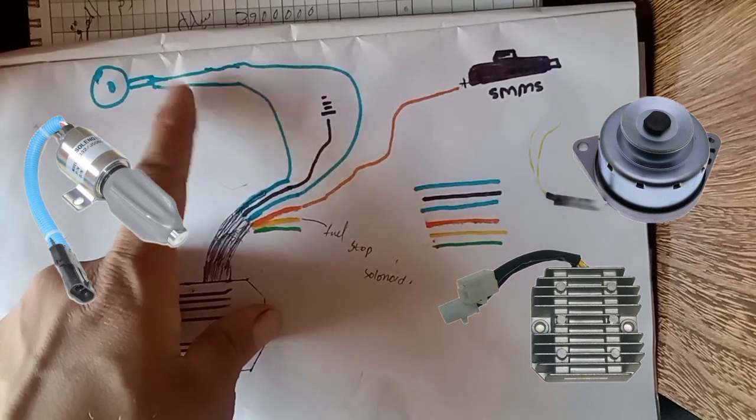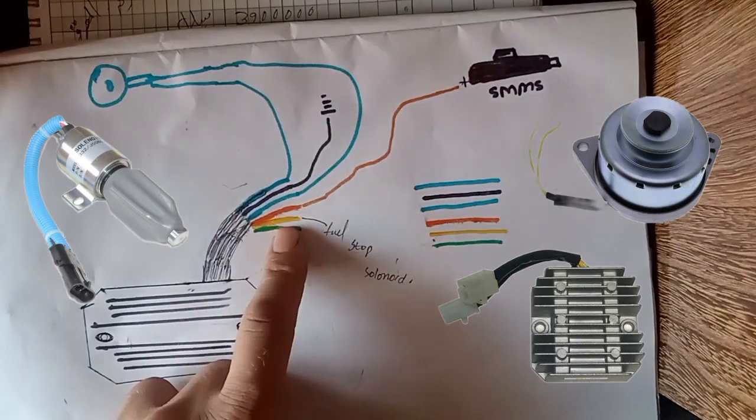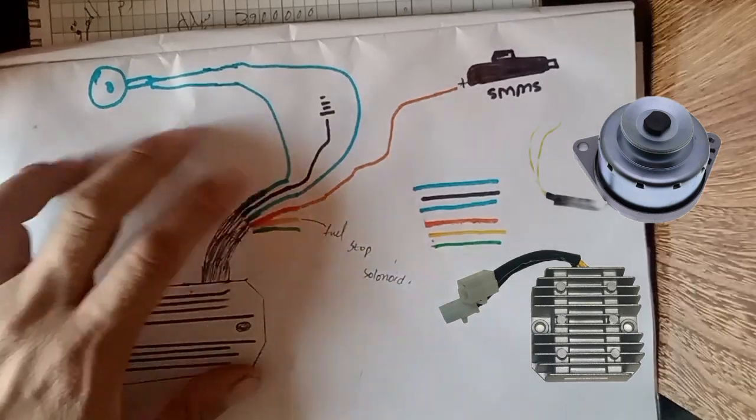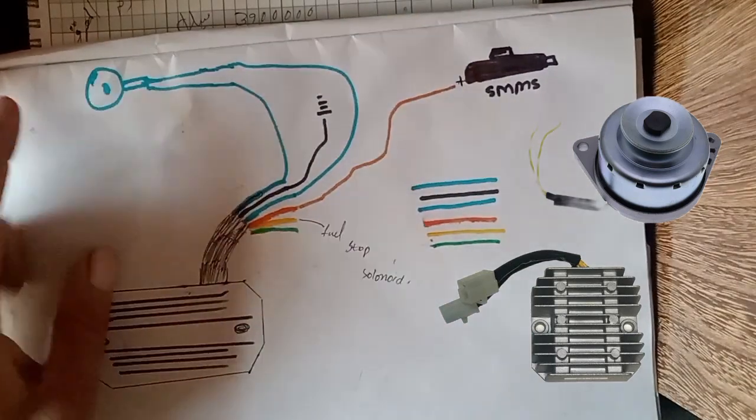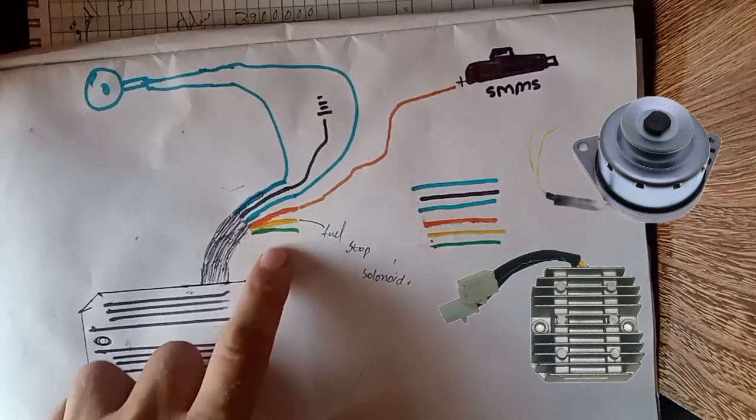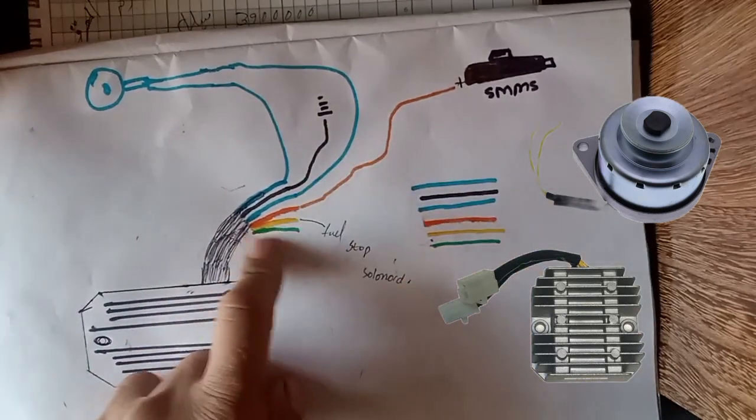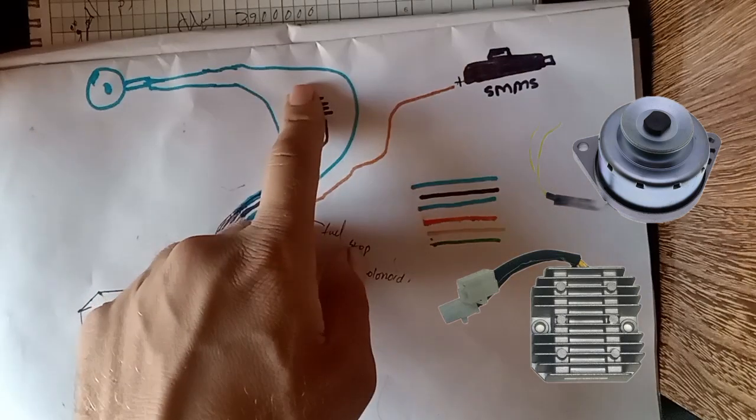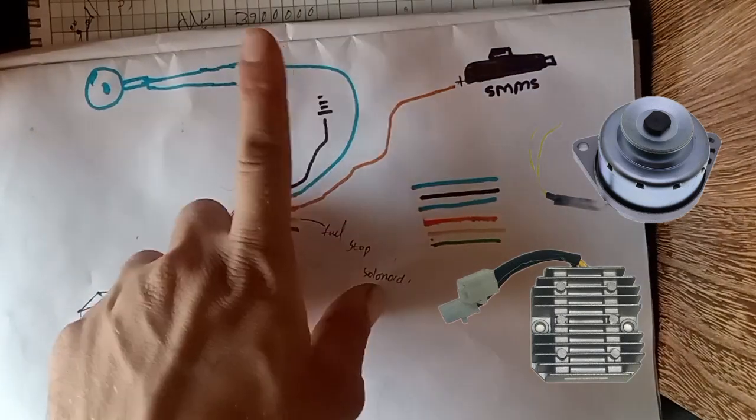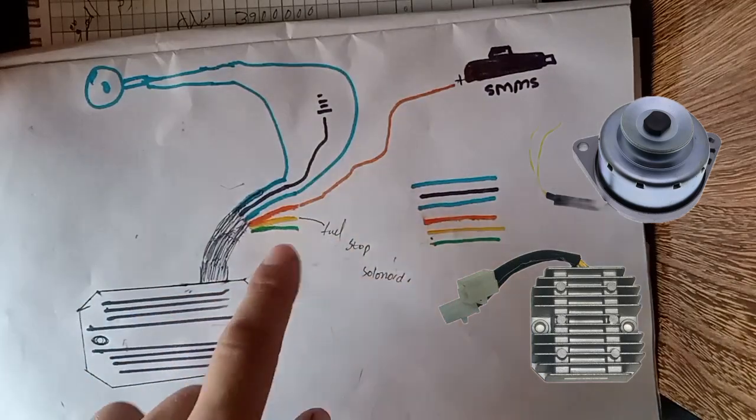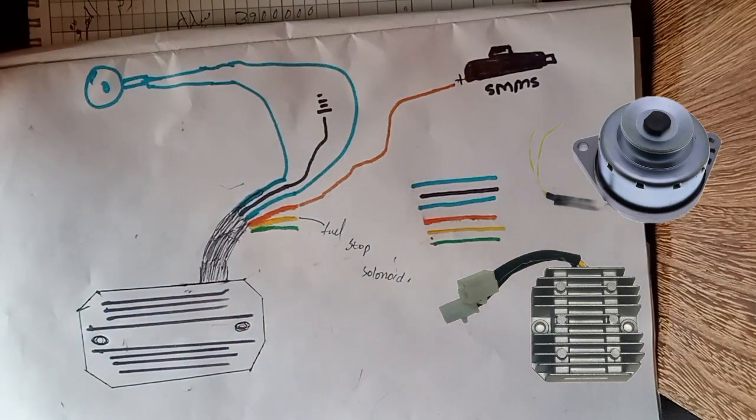Finally, this green wire is the warning light for the charging alternator. When the AC charging alternator fails, this wire sends negative to your warning light, and the warning light will glow up. This tells you the charging alternator is not working.